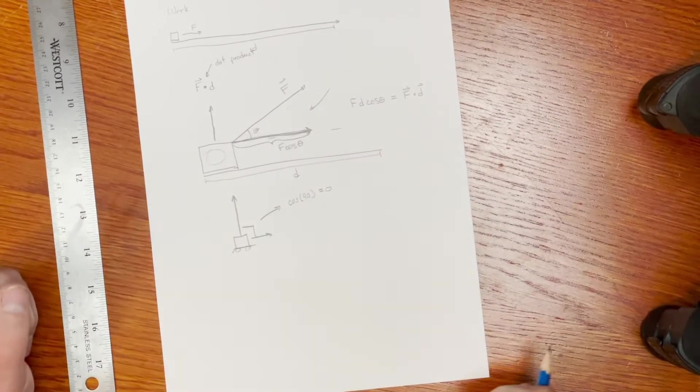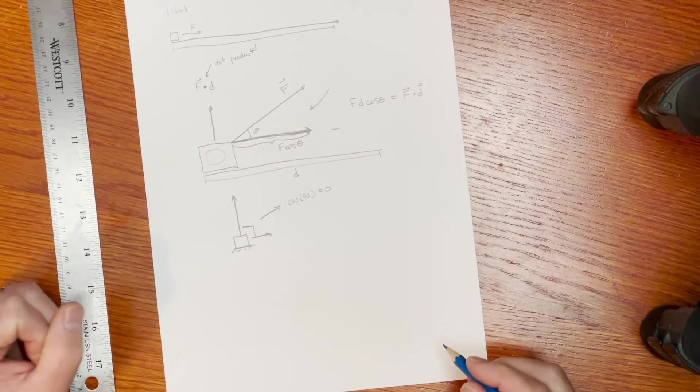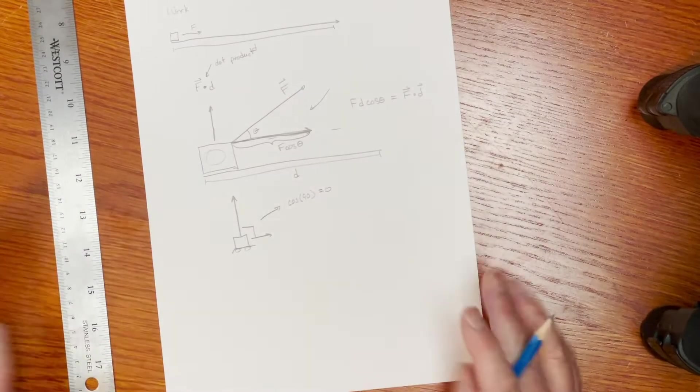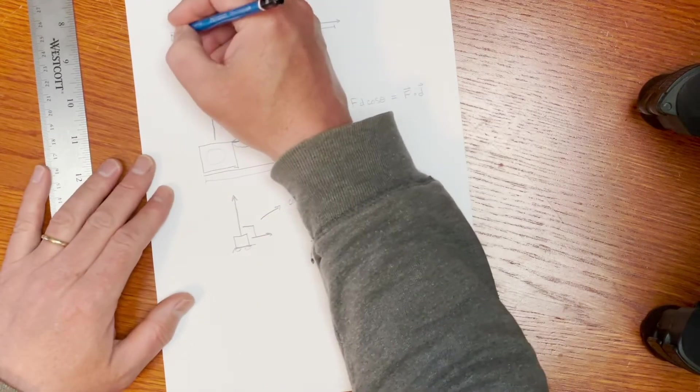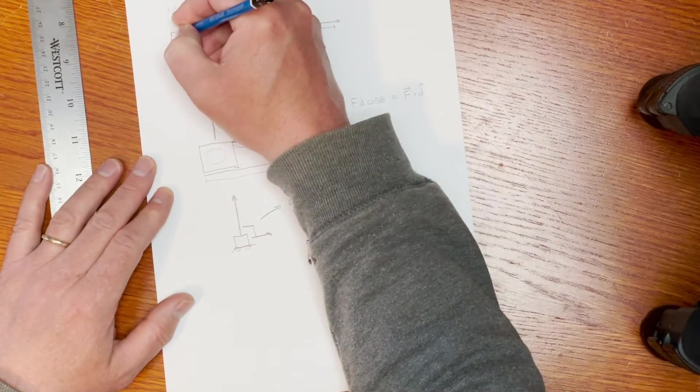And so the cosine of 90 degrees is zero. So there's no work being applied to that. Okay, so that's the whole concept of work that we want to look at today. And I want to do some examples to illustrate that.